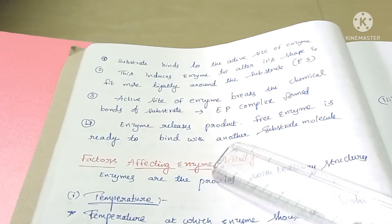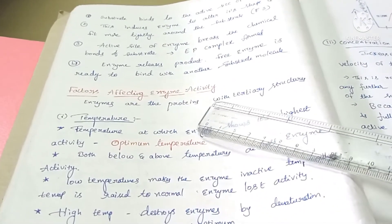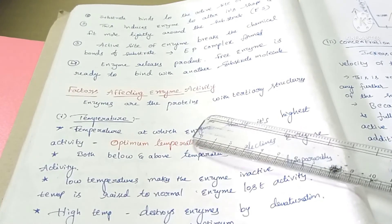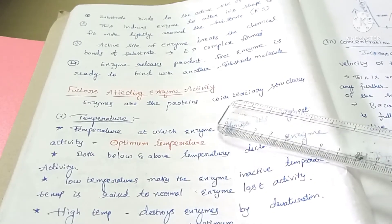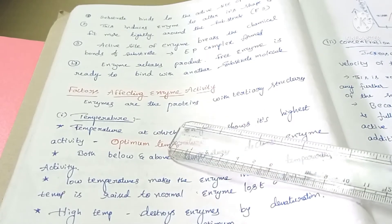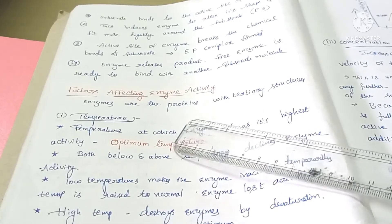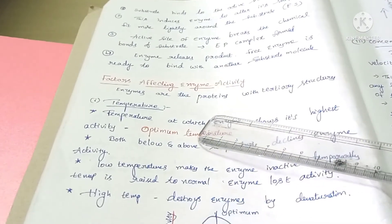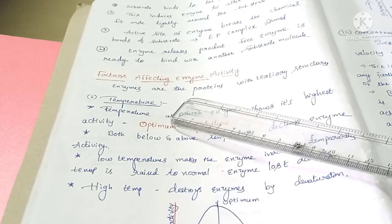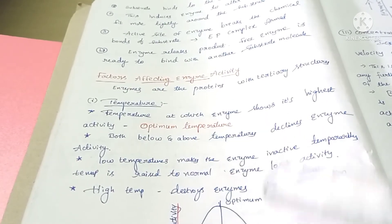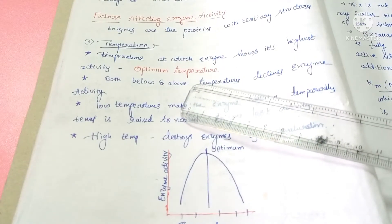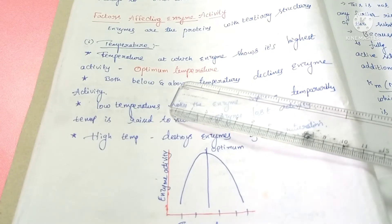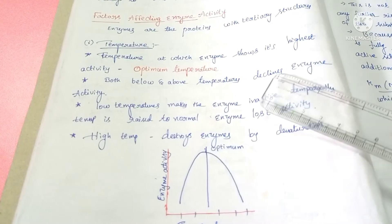The next topic is factors affecting enzyme activity. The enzyme activity is affected by several factors. We know enzymes are proteins with tertiary structures. The factors include temperature, pH, and concentration of the substrate. The first factor is temperature — the temperature at which an enzyme shows its maximum activity is called the optimum temperature. Every enzyme has its optimum temperature.